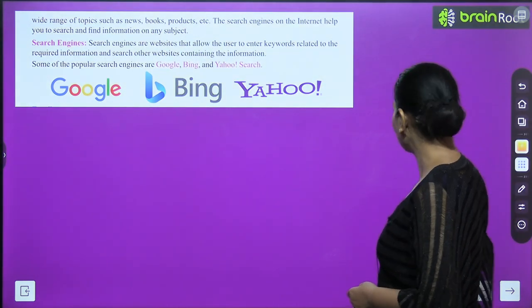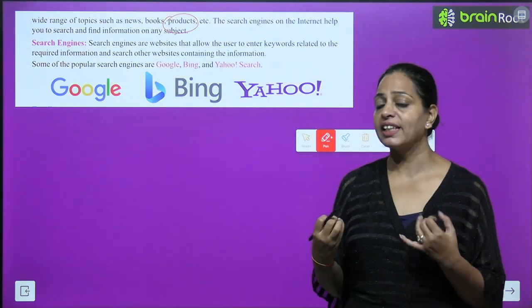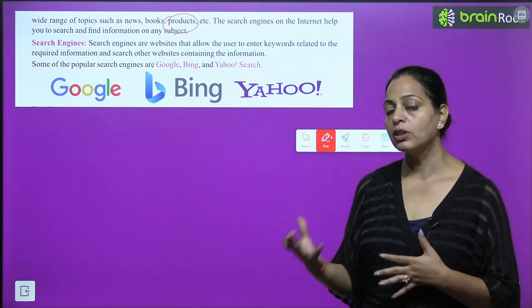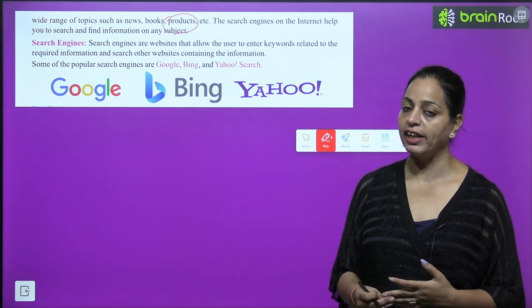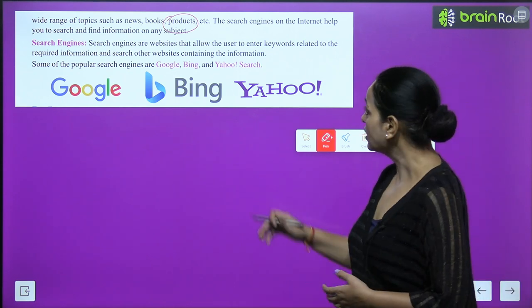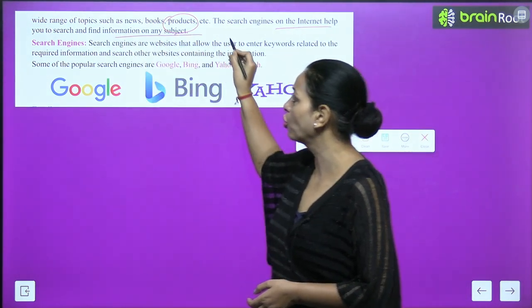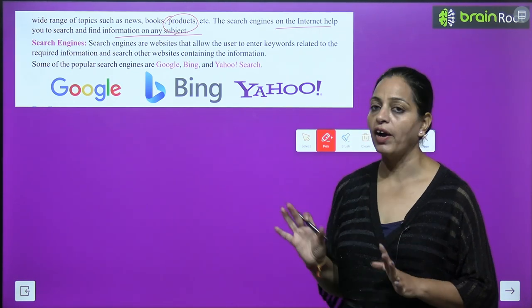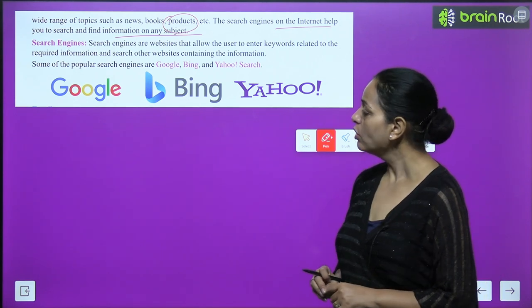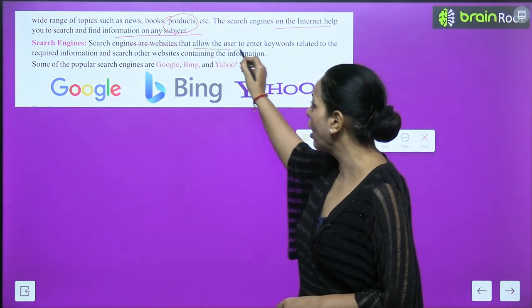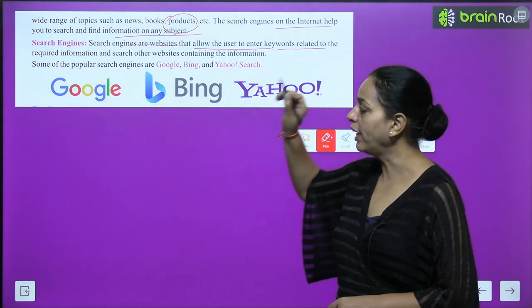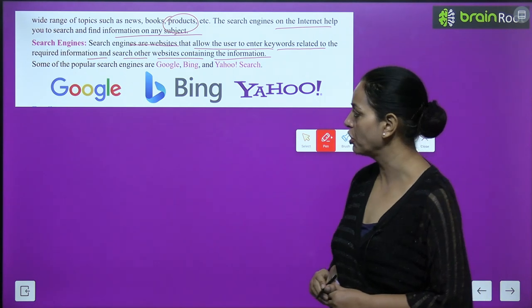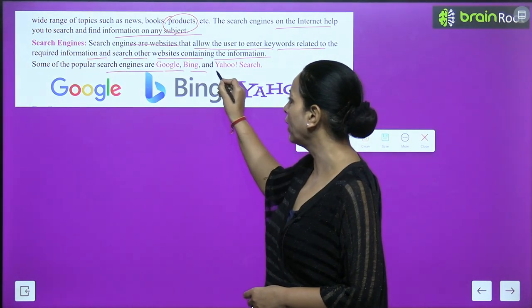You can search about any product — for example, if you want to know about a cosmetic cream, or read about a book. Search engines on the internet help you to find information on any subject. Search engines are websites that allow the user to enter keywords related to required information and search other websites containing that information. Some popular search engines are Google, Bing, and Yahoo.